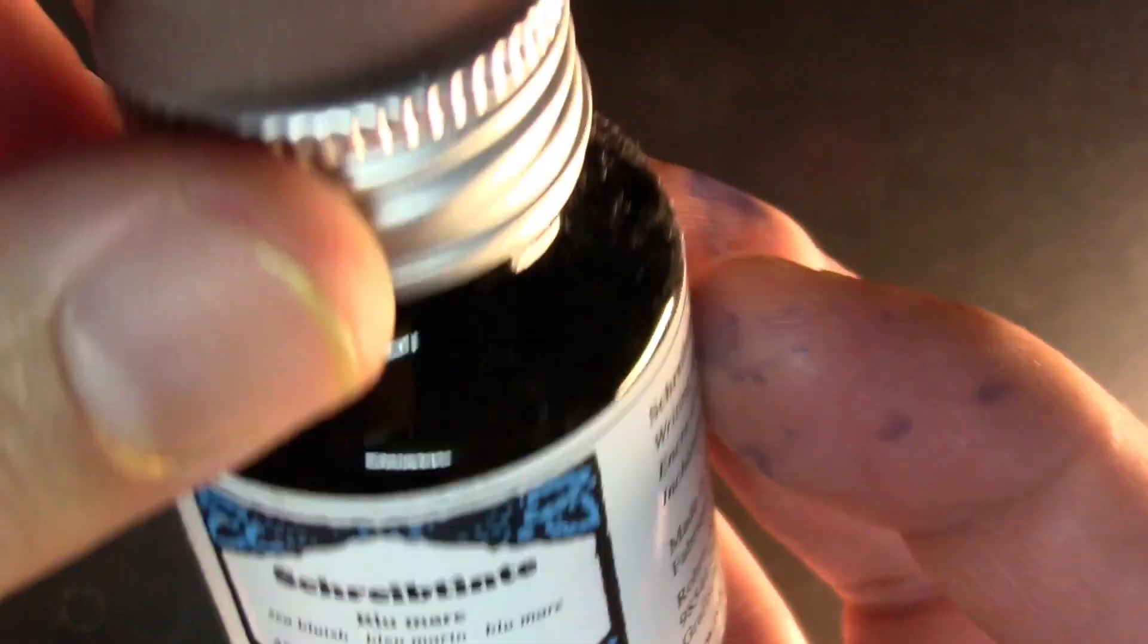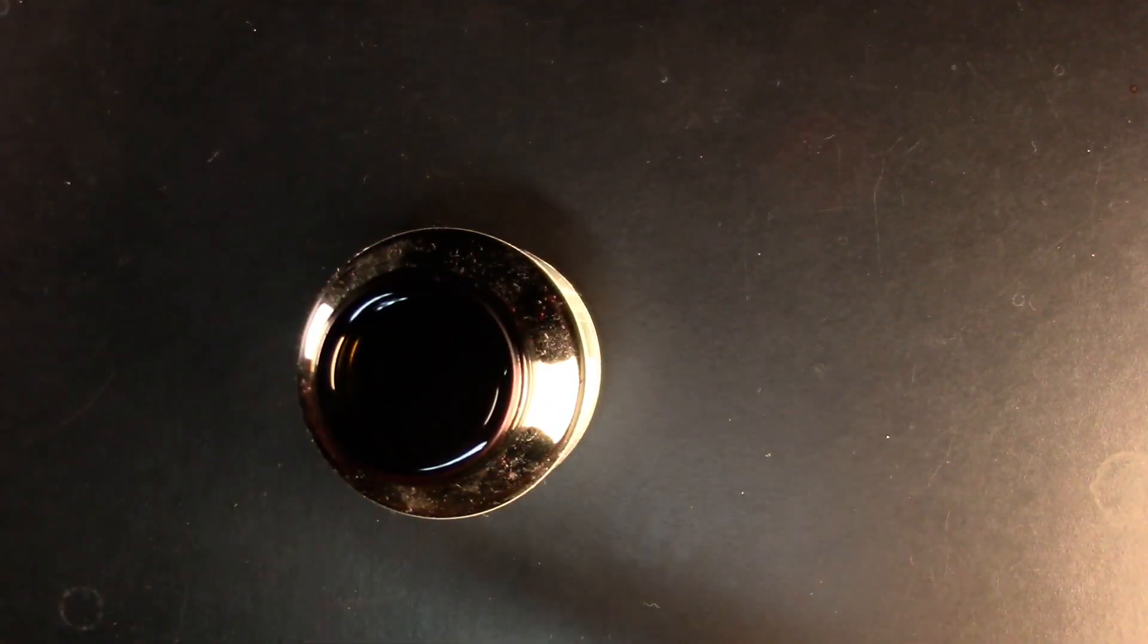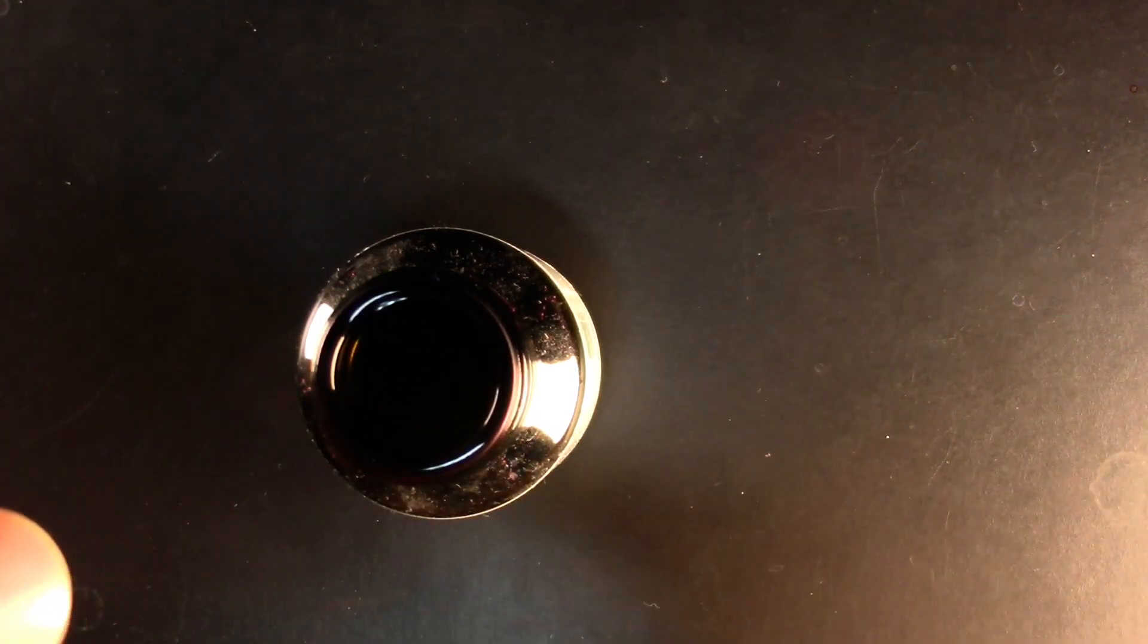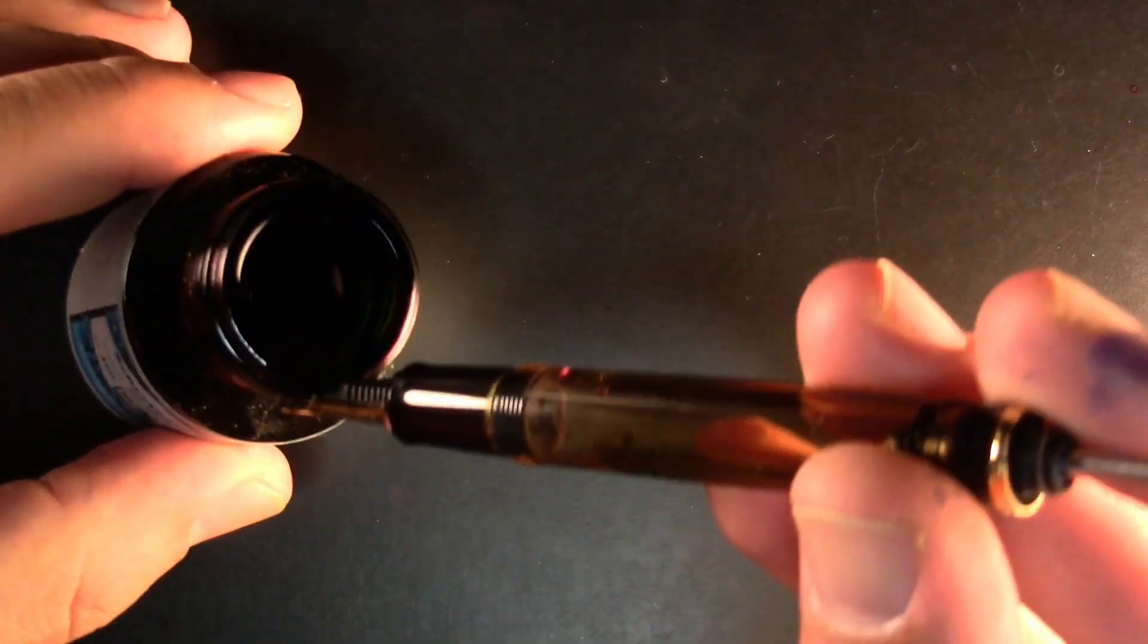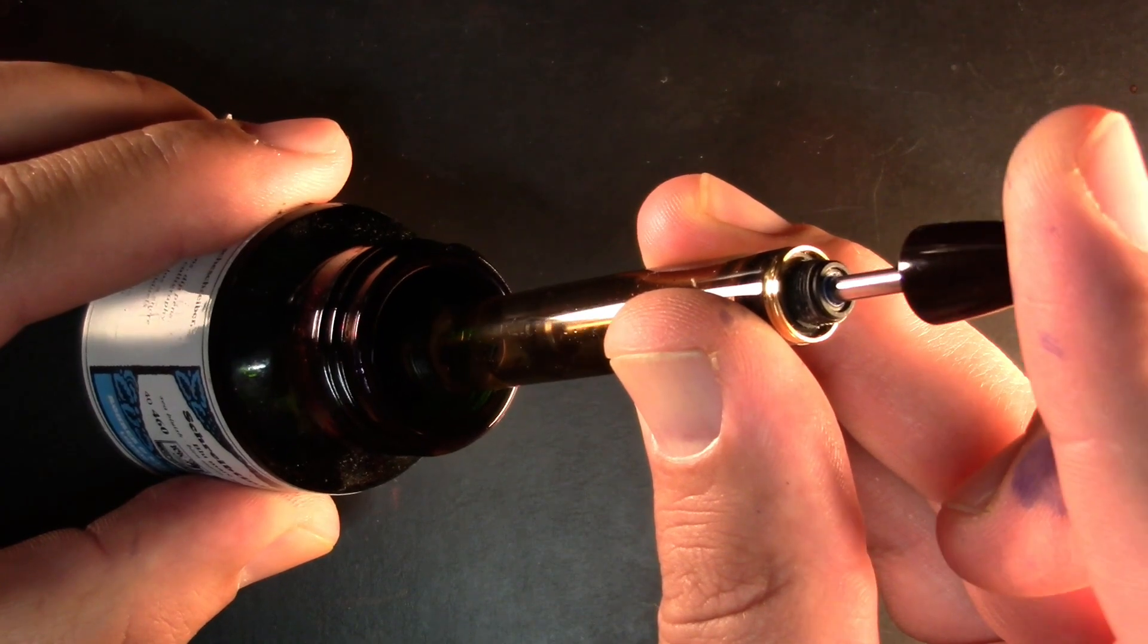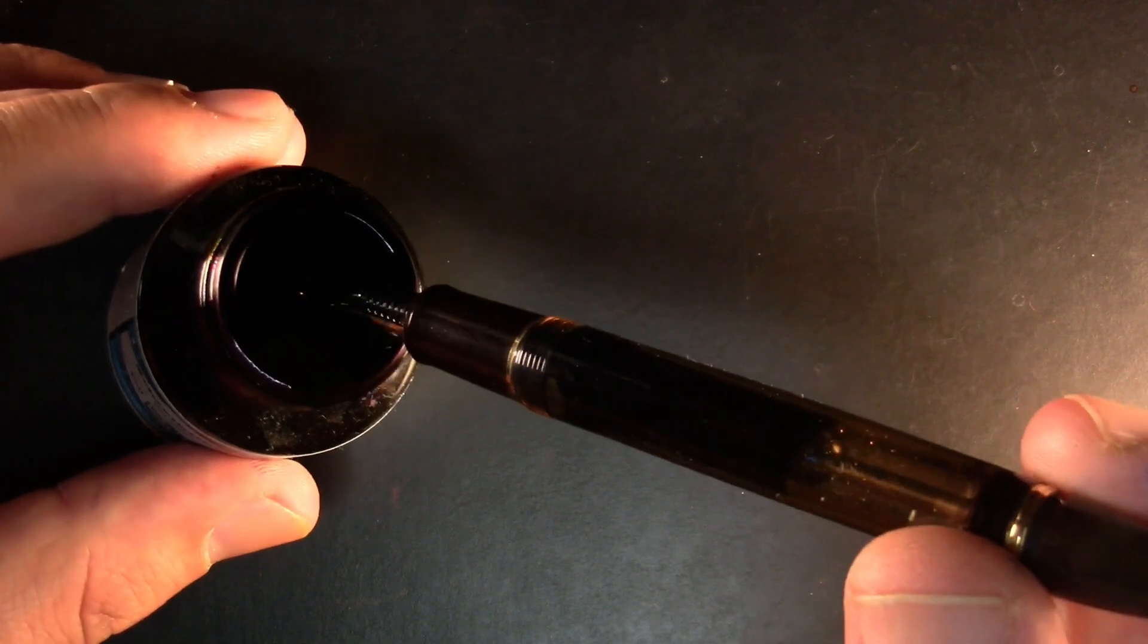For my next few comparisons I'm going to be using Rohrer and Klingner's Blue Mar because I'm trying to burn through ink. Let's just see the dramatic vacuum filler in action. We'll tip it as far to the side as I dare. Hear the bubbling? There you go.